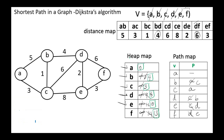If we want to know the path, for example from A to F, the shortest distance is 13. The path is traced as: F → parent of F is E → parent of E is D → parent of D is B → parent of B is C → parent of C is A, which is the source. So the minimum distance from A to F is 13, and the path is A–C–B–D–E–F. The shortest path from A to B is 4, and the path is: parent of B is C, parent of C is A, so the path is A–C–B, not A–B directly.